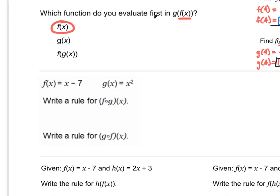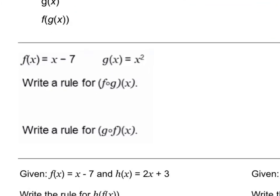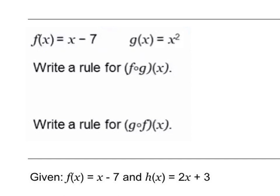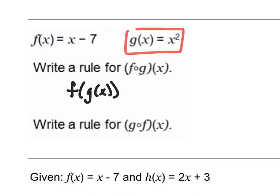Now let's write an actual rule — get a function out of this. When it says f∘g of x, that means we're doing f of g of x. I'm going to take function g, specifically the x², and plug that into the x value of my other function.